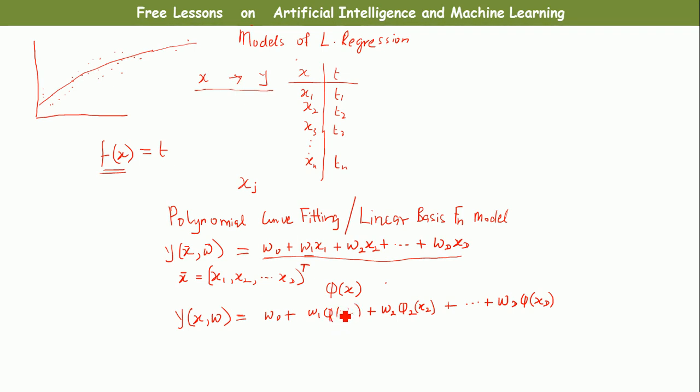So if we now take the sum, what we now have is the initial function that we had in the first line. So we have y(x,w) equals w0 plus, we now take a summation of all these variables from 1 to m-1. m-1 because we already have an initial value of w0, which you can actually call a bias. The summation is w_j*phi_j(x).